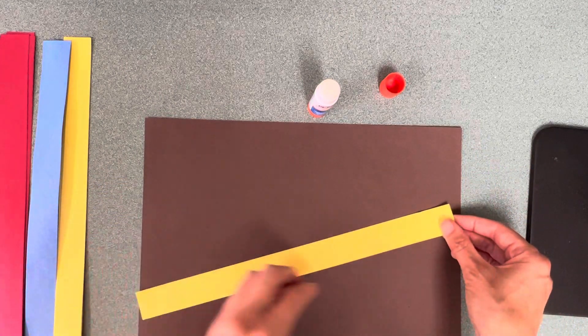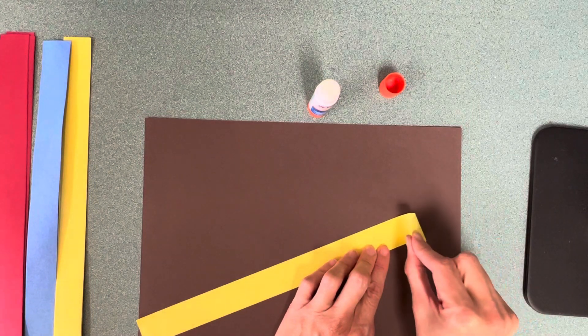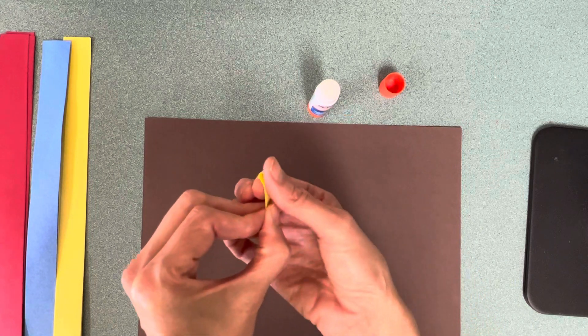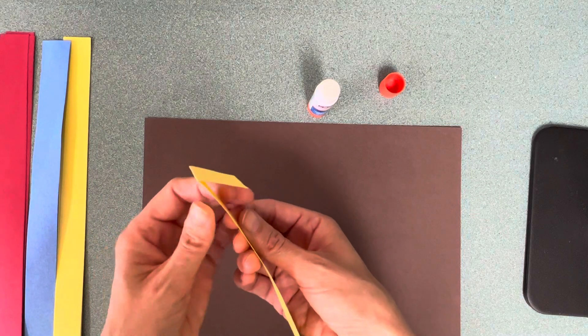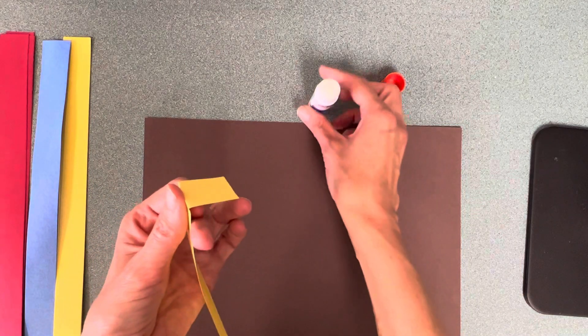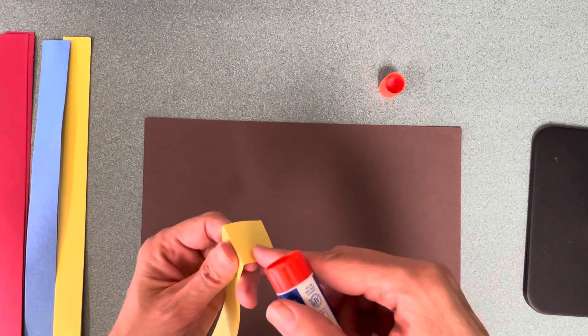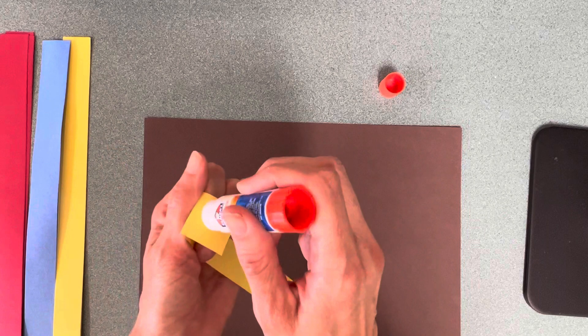All right everybody, step one: take a strip and you are going to fold it a little ways and pinch. Do you see that fold and pinch? You're going to take your glue and you're going to put glue just on the foot. Not on the whole strip. Just on the foot.